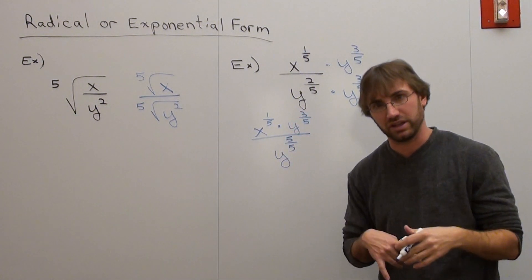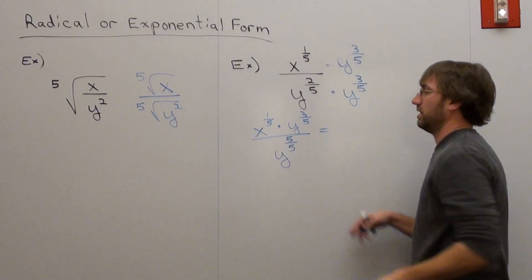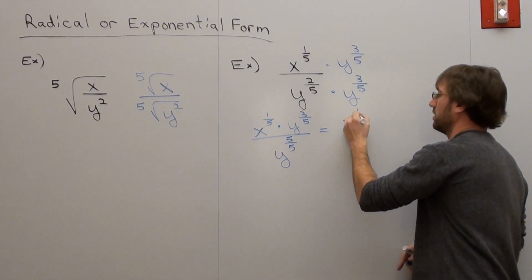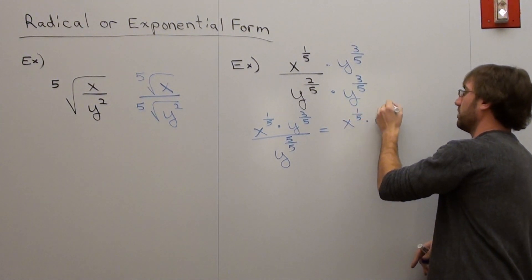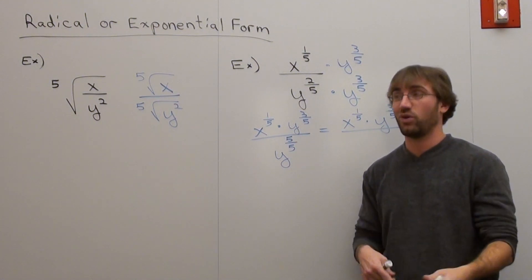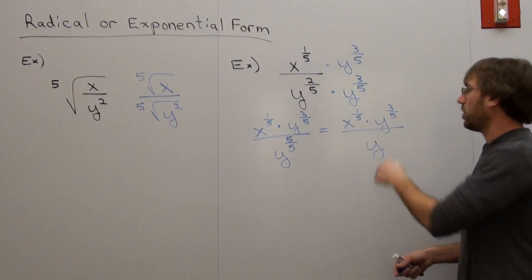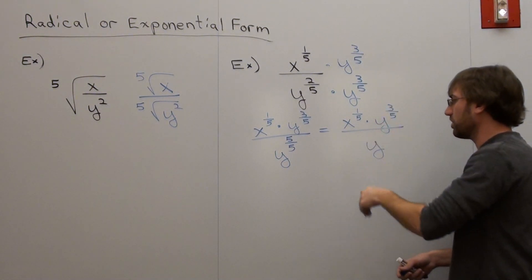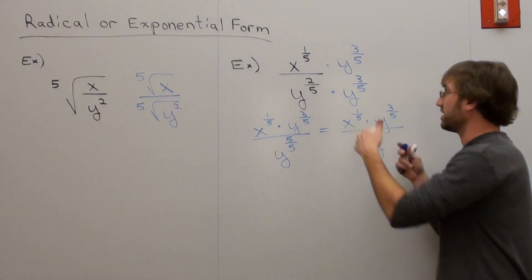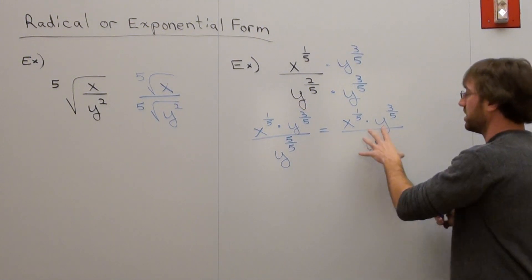And this is just x to the one-fifth times y to the three-fifths. Different bases, so I can't multiply the exponent, I can't add the exponents together. Let's not simplify the numerator just yet. It's x to the one-fifth times y to the three-fifths. y to the five-fifths is y to the one, or just y. Okay, that's good. Can I divide the y to the three-fifths and y to the first? Yeah, you could, but you'd just be starting back over here. You don't want to do that. What you want to do now is put this in radical form.